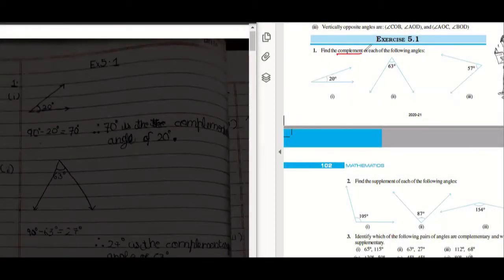Find the complement of each of the following. The complementary angles are those angles whose sum is 90. So what they are trying to ask is we need to find an angle which, after adding, this angle becomes 90. Is it making sense?